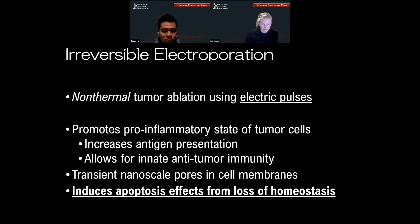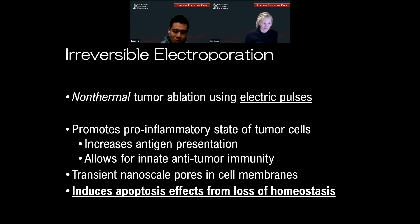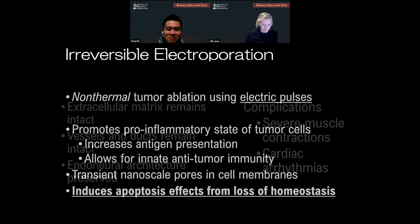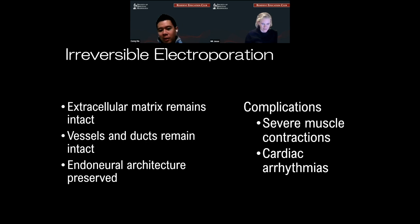Irreversible electroporation is non-thermal tumor ablation using electric pulses. Theoretically it promotes a pro-inflammatory state of tumor cells, increases antigen presentation, and allows for innate anti-tumor immunity. It creates nanoscale pores within cell membranes by disrupting their electricity, and you also get apoptosis effects from loss of homeostasis. When you use this tool, the extracellular matrix technically remains intact, the vessels and ducts technically remain intact, and the key point is that the endoneural architecture is preserved — it doesn't mean they don't get damaged, but theoretically they can rebuild. The complications include severe muscle contractions, because you're essentially doing controlled electrocution, and that can cause cardiac arrhythmias. Even though patients are under anesthesia, you have to make sure the patient is secure.